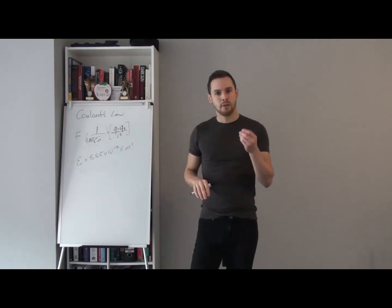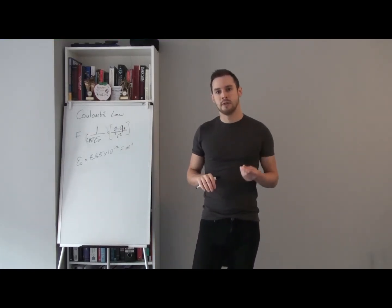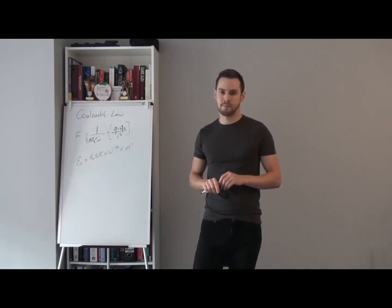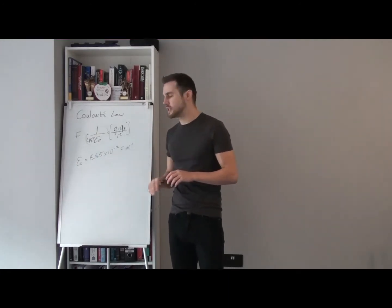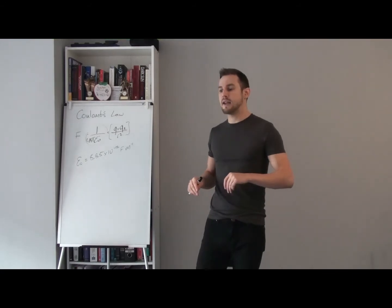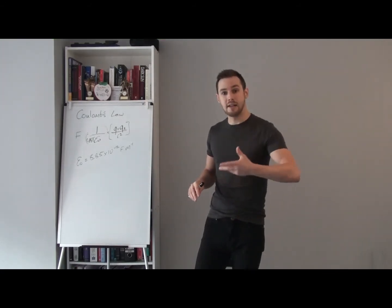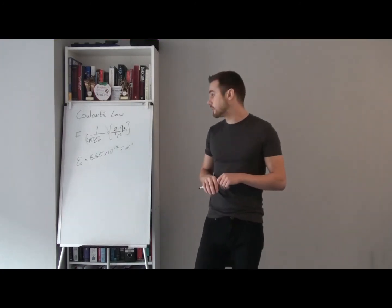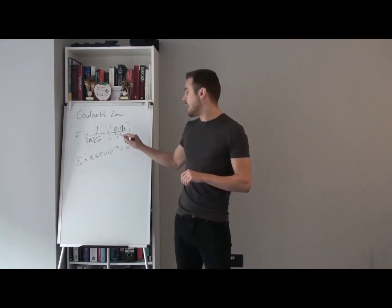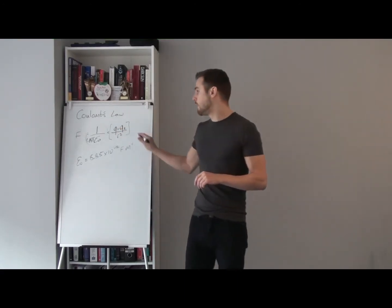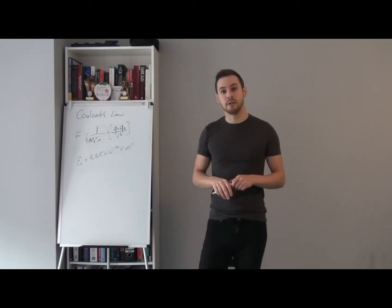Now, this epsilon zero, or epsilon naught, this is called the permittivity of free space. And the permittivity of free space essentially tells us how easily an electric field can propagate through space. So we can think about it as it is permitting an electric field to propagate. And by permitting the electric field to propagate, that tells us how easily those two charges influence one another, and therefore the magnitude of the force between those two.